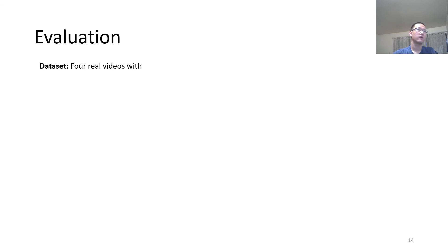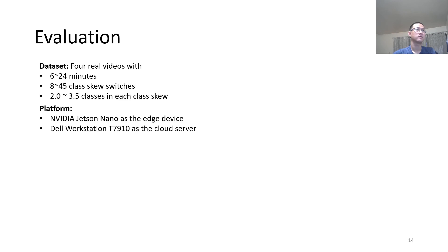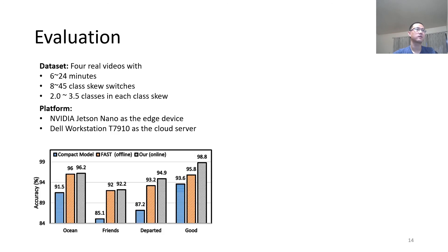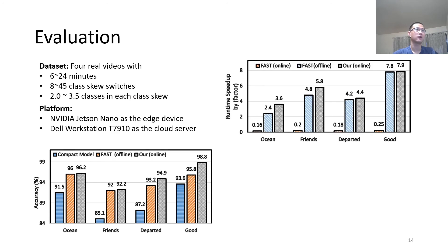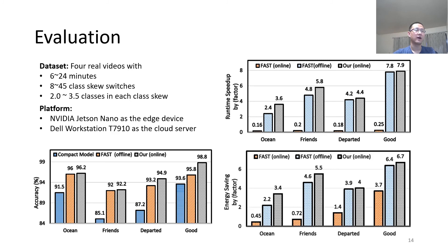We evaluate Palin with four real-world videos. These videos have length from 6 to 24 minutes, 8 to 45 class skew switches. In each class skew, we have 2 to 3.5 classes on average. We use the NVIDIA Jetson Nano as the edge device, and a Xeon Workstation as the cloud server. Comparing with baseline approaches, we see that Palin can increase the accuracy, achieve speedup, and save energy.